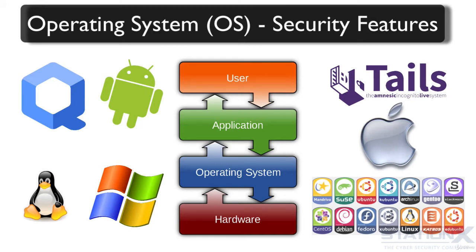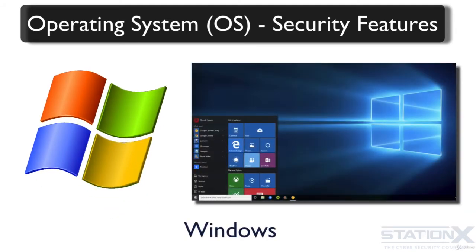Let's consider the security features available within operating systems and also available third-party apps for those operating systems. Windows has got a bad track record — there's no doubt about that. It's had weak security design from the beginning, but you have to give credit where credit is due. In the more recent operating systems, Microsoft has started to take security seriously, with features like BitLocker, Device Guard, Windows Hello, and Windows Trusted Apps, giving it a fairly solid set of security features now. The thing that lets Windows down, especially with Windows 10, are the tracking and privacy issues.